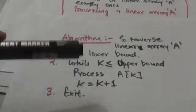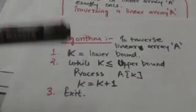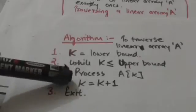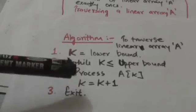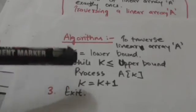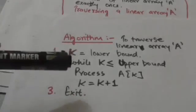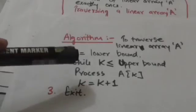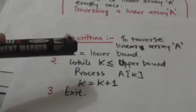These two steps will be repeated. First, element A[K] is processed, then K is increased by 1 so that we can access and process the next element of array A.